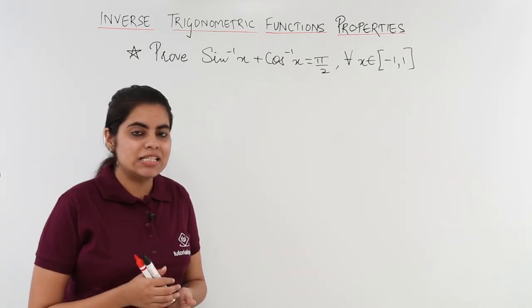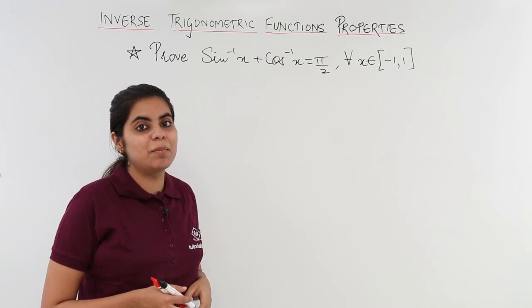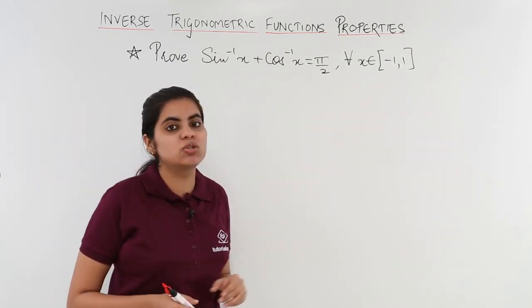The property says sin inverse x plus cos inverse x is equal to pi by 2 for all x belongs to minus 1 to 1.